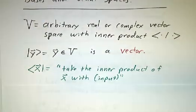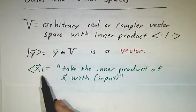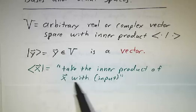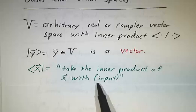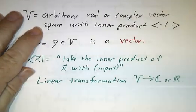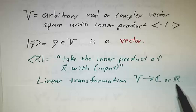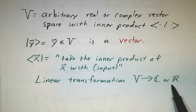The bra x is not a vector, it's a linear operation. It's saying take the inner product of x with whatever your input happens to be. So that is a linear transformation from V to the complex numbers or the real numbers, depending on whether we have a complex or real vector space and inner product.